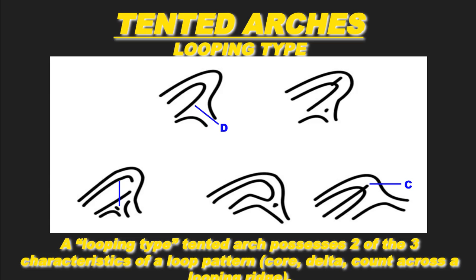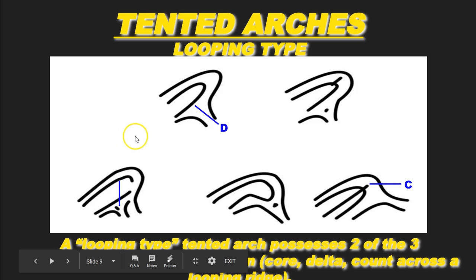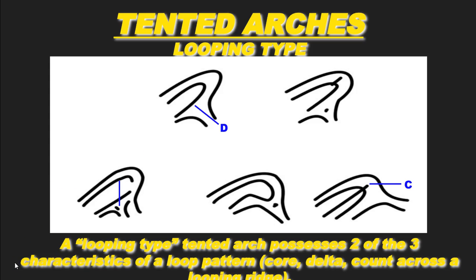This is the end of video one on classifying loops. Make sure you watch video two, which will talk about how to determine whether a fingerprint is an ulnar or a radial loop.